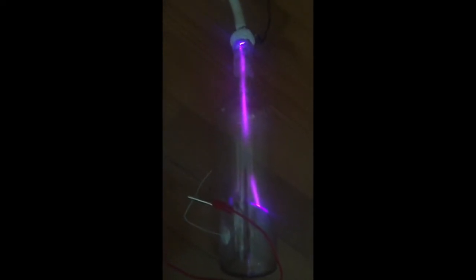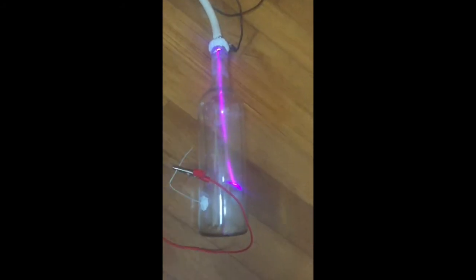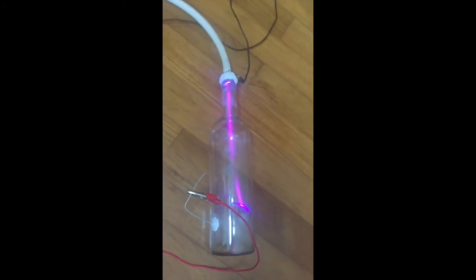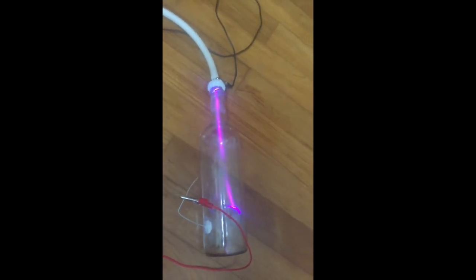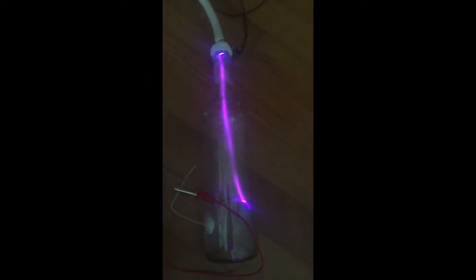As electrons are flowing from the cathode to the anode, there are traces of air remaining in the tube. When they are passed through high voltage, the air gets ionized and a plasma is created. This purple discharge over here is actually the plasma—it's electrons flowing from one end to another.